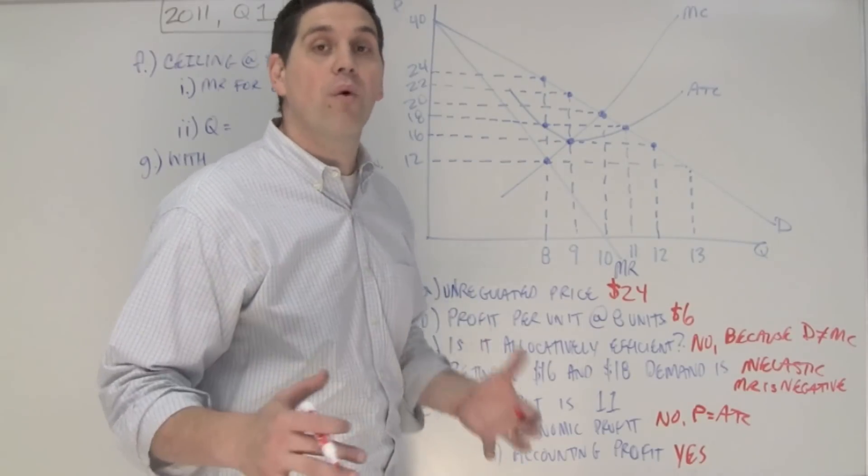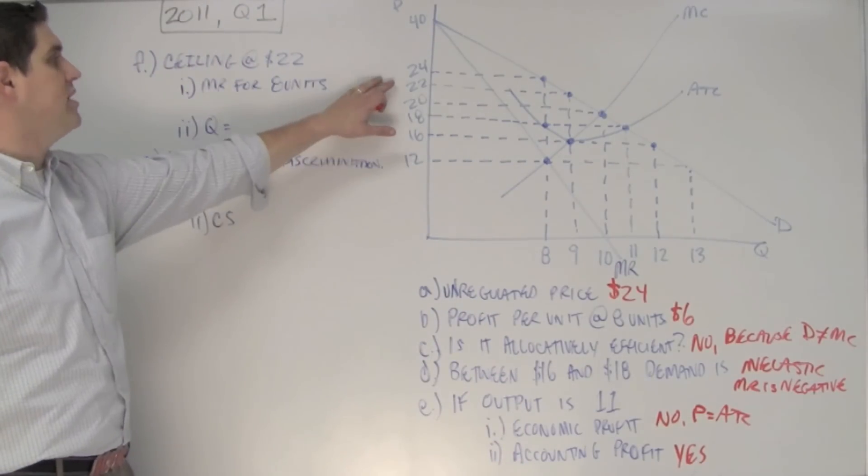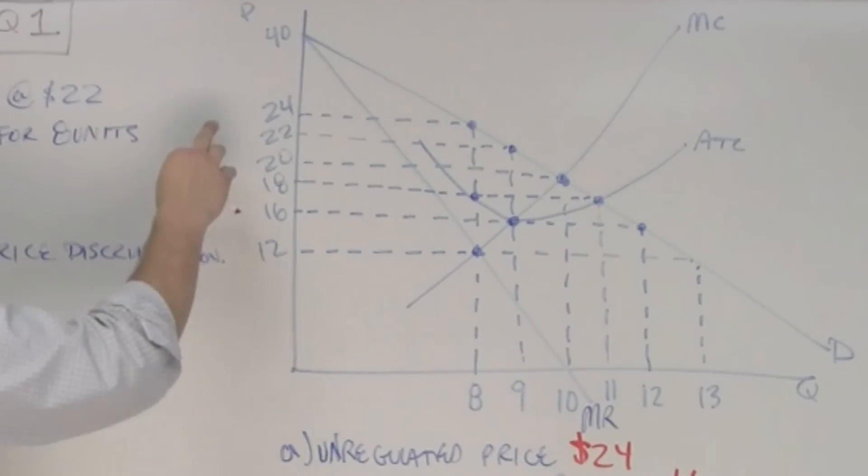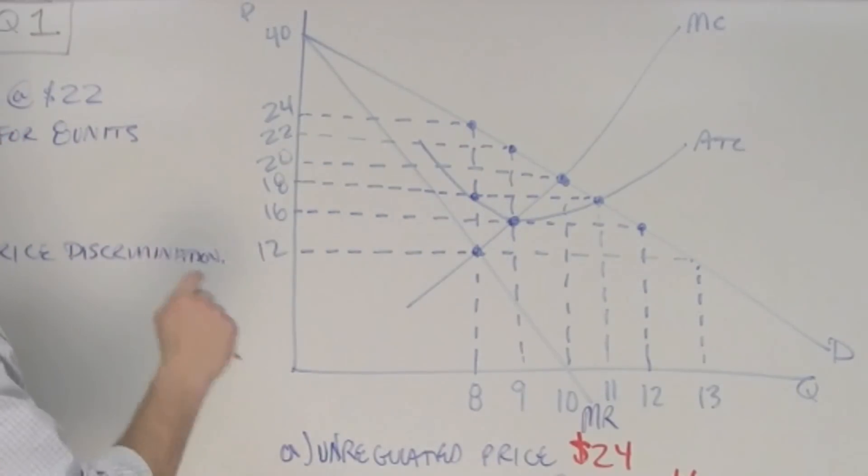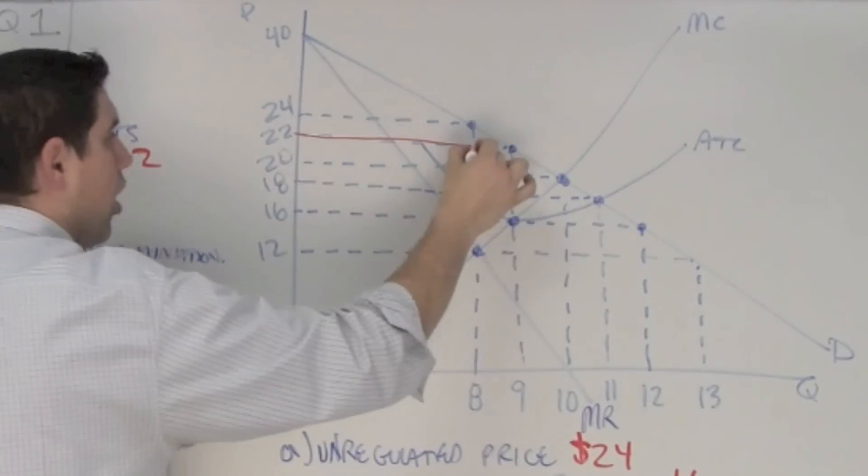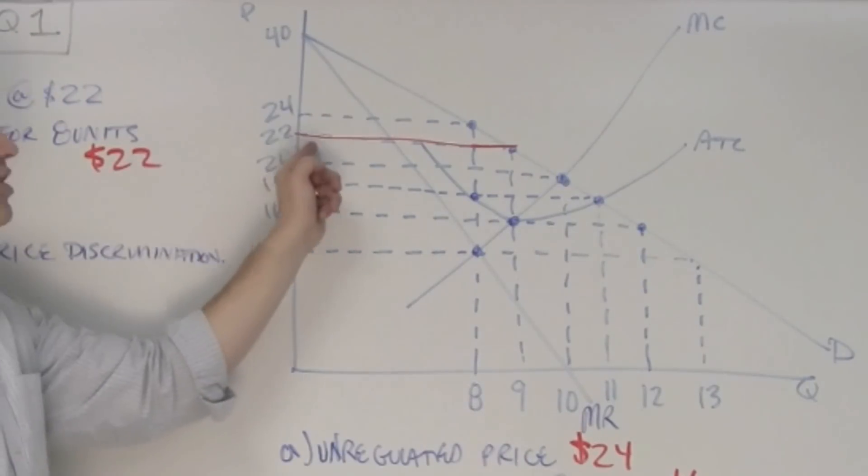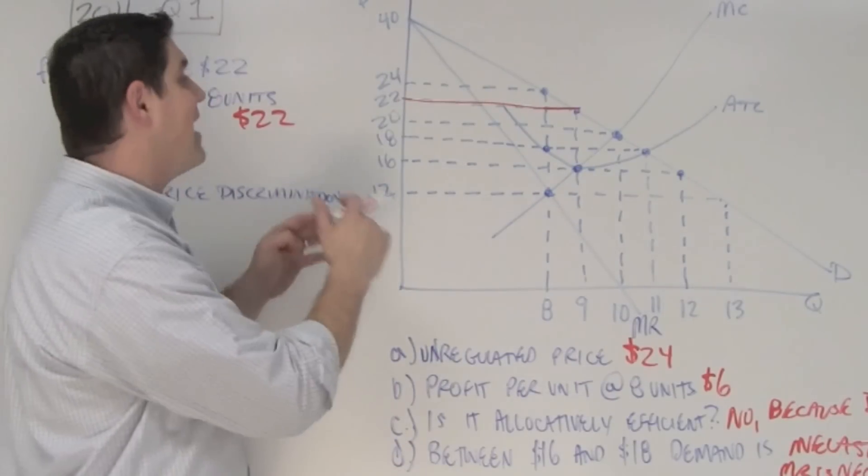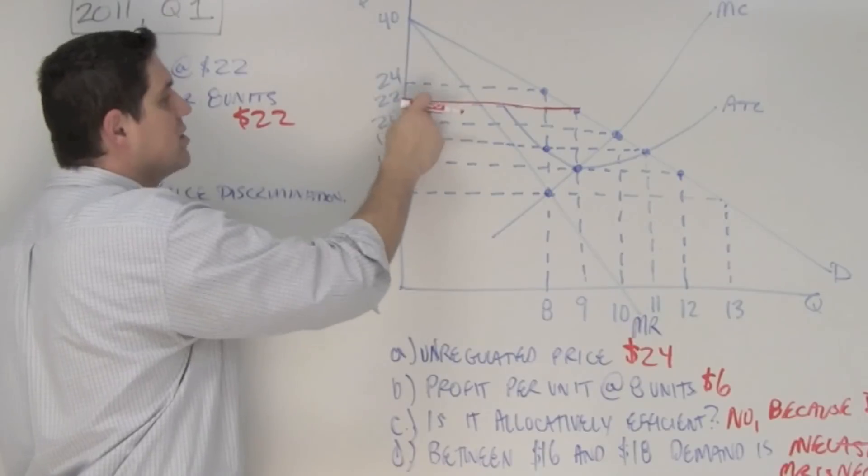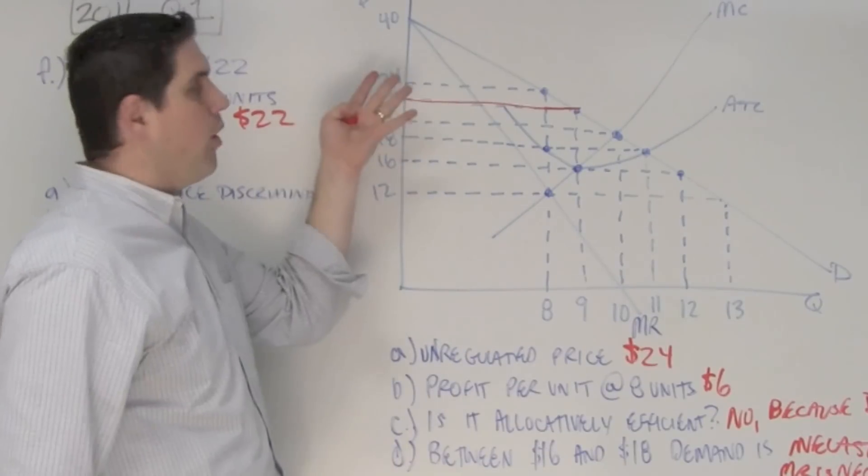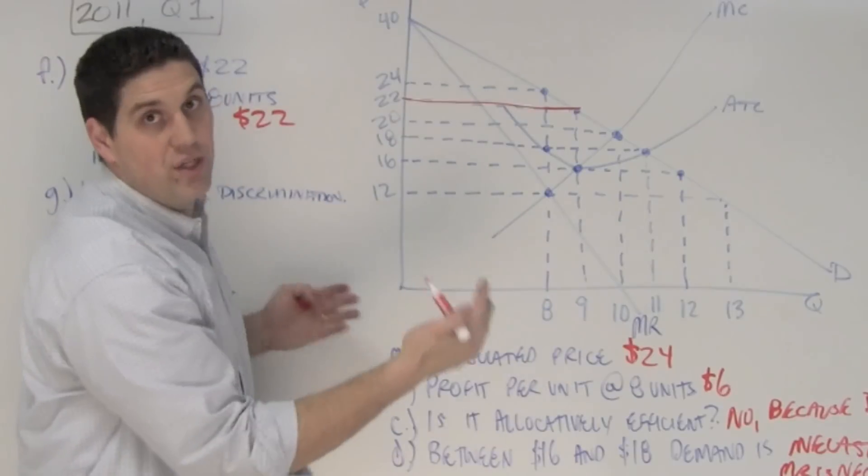Now, the question continues on with more regulation. It says, assume there's a price ceiling at $22. $24 was the unregulated monopoly's price, but they can't charge that anymore. Now, they can only charge up to $22. So, the first question is, what's the marginal revenue of the 8th unit? Well, since they can't even sell it for $24, the marginal revenue is actually only $22. So, $22 is the right answer. In other words, the government has effectively put on a price ceiling all the way through there. You can't raise the price higher than $22. So, this monopoly essentially becomes a price taker at the price of $22 up to that quantity 9. And so, to sell another unit, they sell for $22. Another one $22, another one $22 because they can't sell it for more. And so, the marginal revenue of the 8th unit is $22.